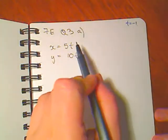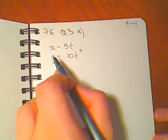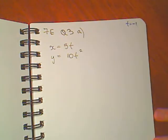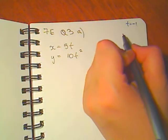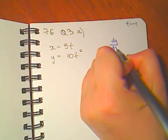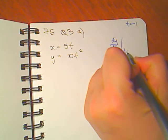Here we are looking at a parametric function. We've got a function of x and y but both with a third parameter t. We're asked to find dy/dx and then evaluate that when t equals minus 1.